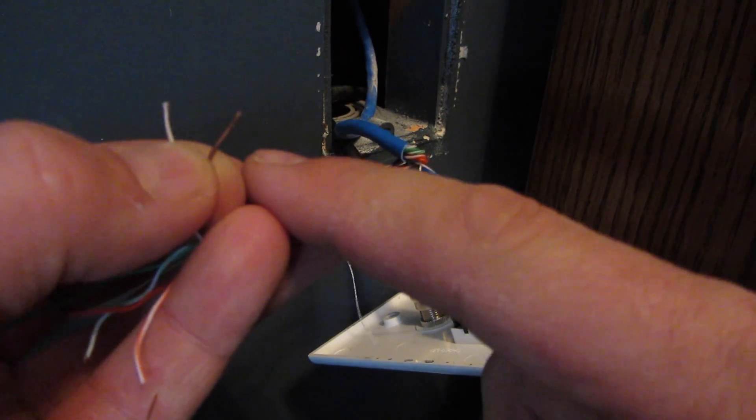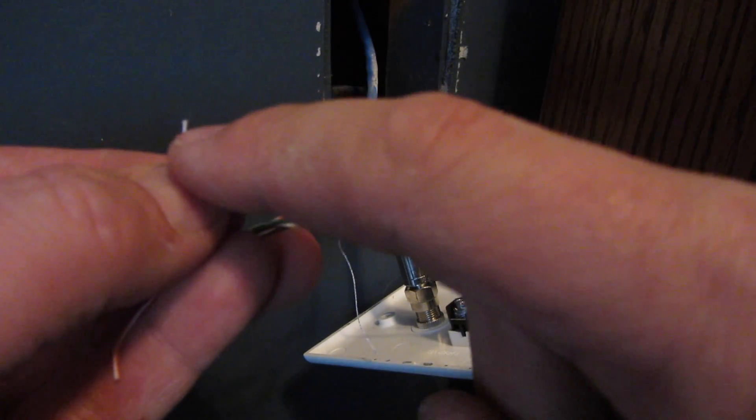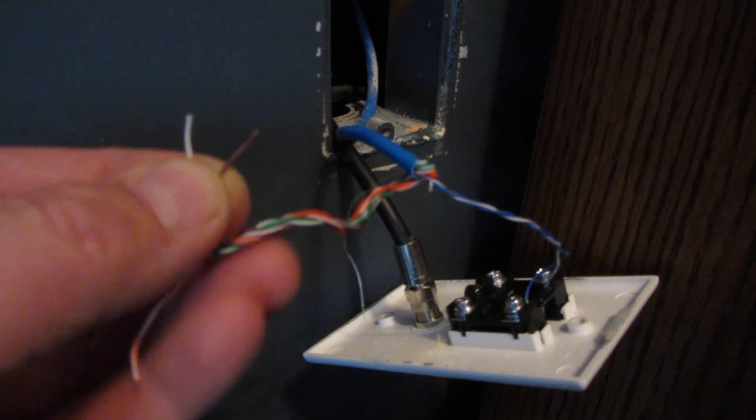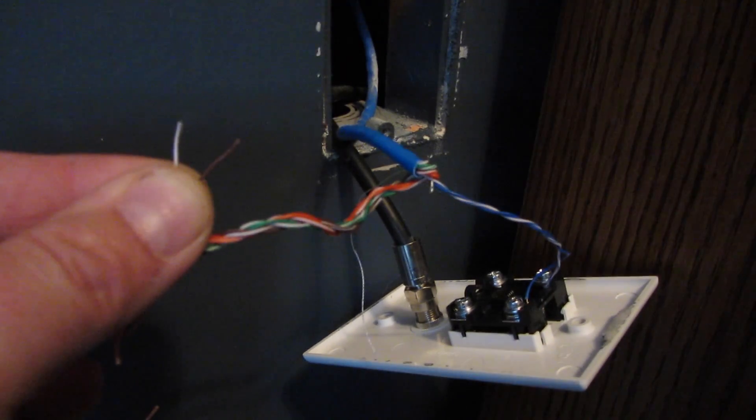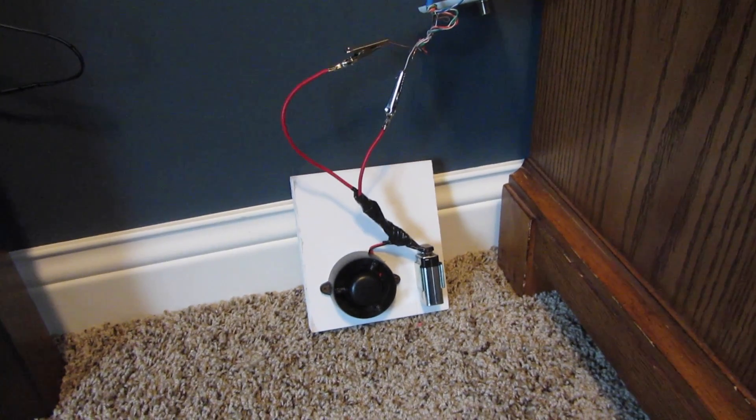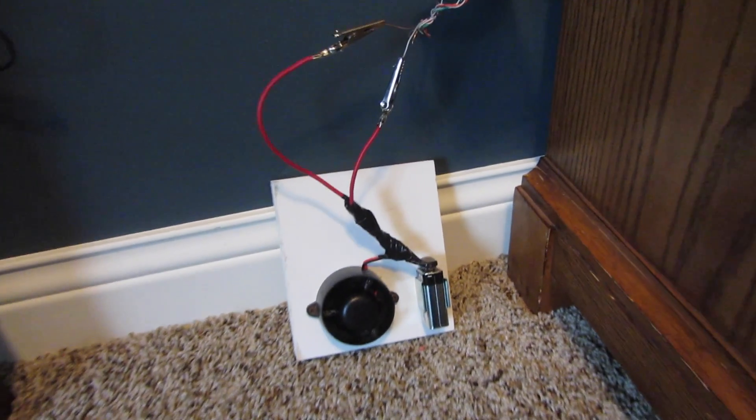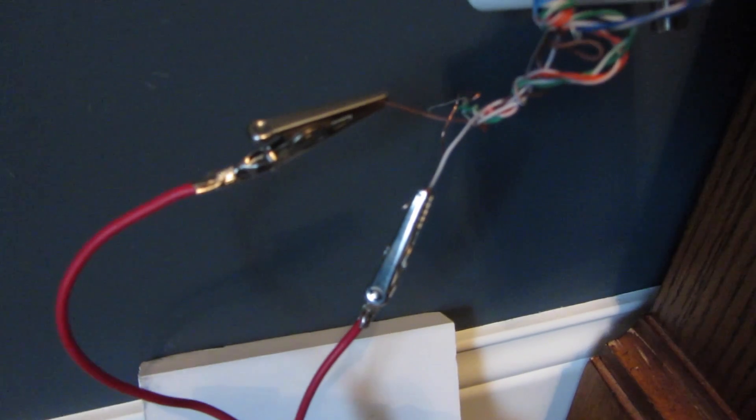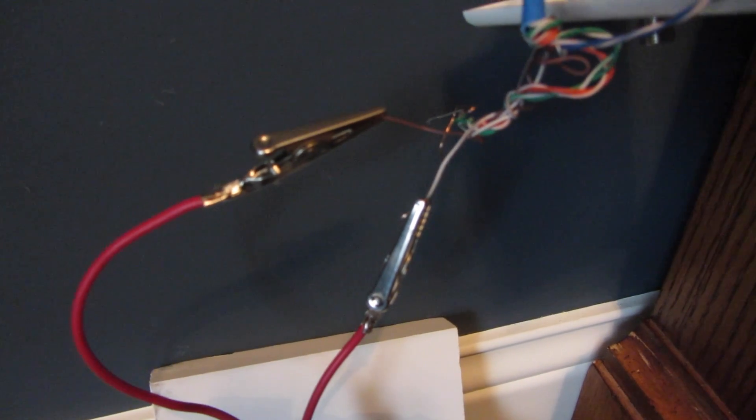I will need to strip off the insulation on the ends of these so I can make a good connection. I have taken my homemade continuity tester and I have clamped the alligator clips to the bare wire ends that I created on the brown and the brown and white wire.